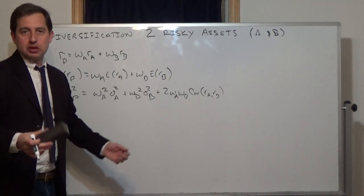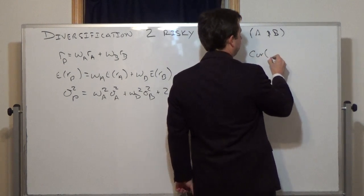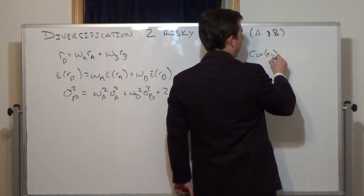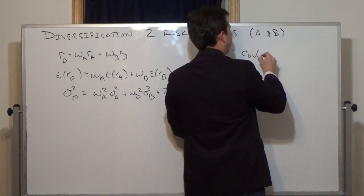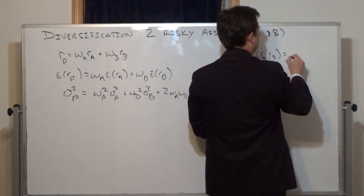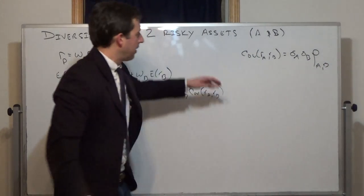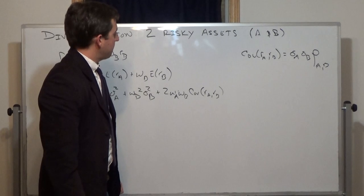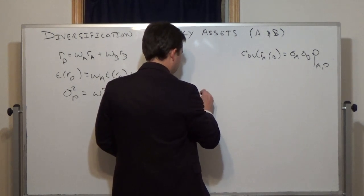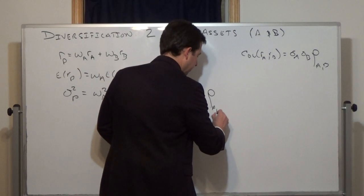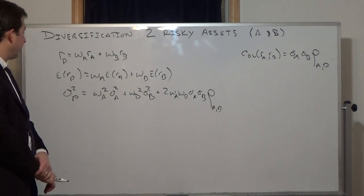The variance of this portfolio is going to be equal to the weight in A squared times the variance of A, plus the weight in B squared times the variance of B, plus two times weight A times weight B times the covariance of returns on A and returns on B. The covariance of the return on A and the return on B is equal to sigma A times sigma B times the correlation coefficient rho between A and B. So it's convenient — I'll replace the covariance term with sigma A, sigma B, rho. This is the portfolio variance.